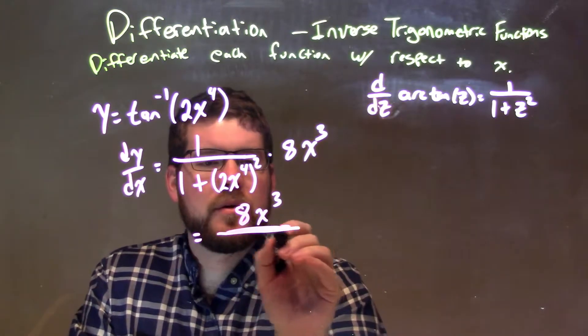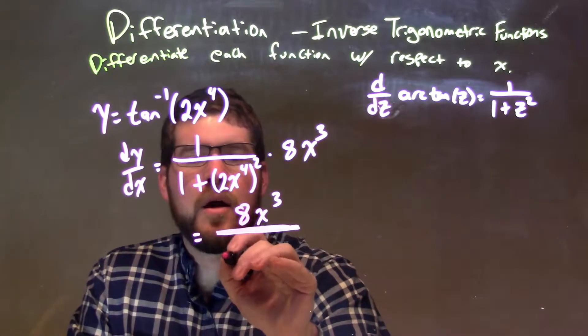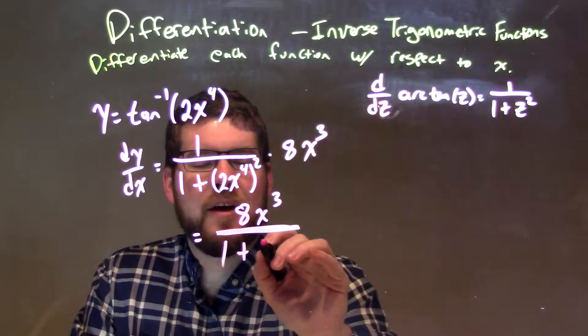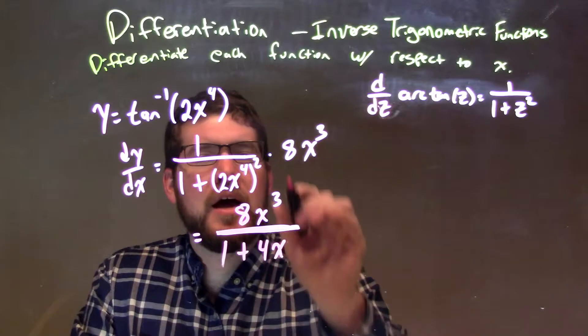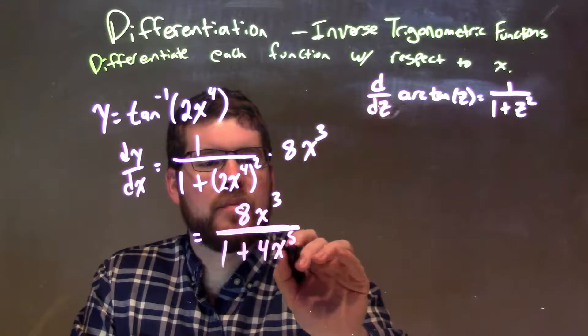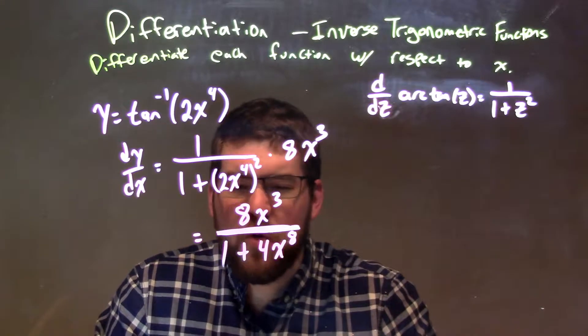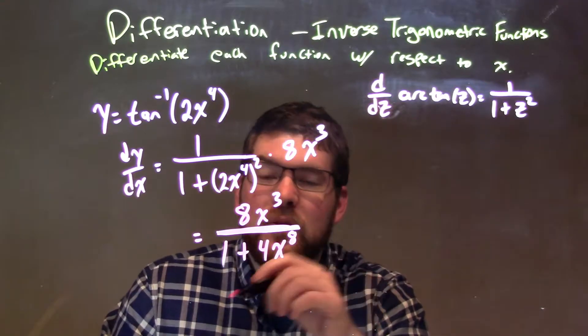For the denominator, that's a big fraction there. 1 plus, let's square that: 2 squared is 4, so we have 4x, and we multiply 2 times 4 to get 8. And so our final answer here is just 8x to the third over 1 plus 4x to the eighth power.